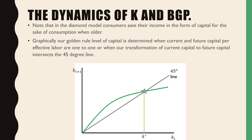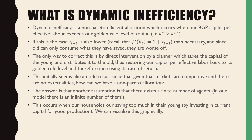Note that in the diamond model, consumers save their income in the form of capital for the sake of consumption when older. Graphically speaking, our golden rule level of capital is determined when current and future capital per effective labor are one-to-one, or when our transformation of current capital into future capital intersects the 45-degree line. Dynamic inefficiency is a non-Pareto efficient allocation which occurs when our BGP of capital per effective labor exceeds our golden rule level of capital — when K star is greater than K golden rule.